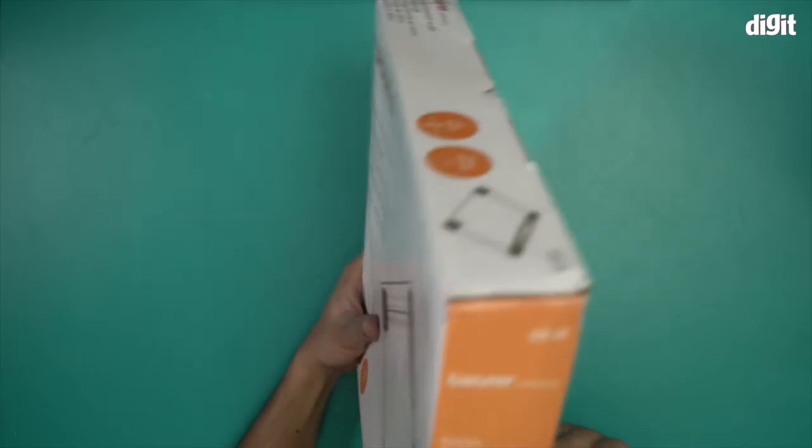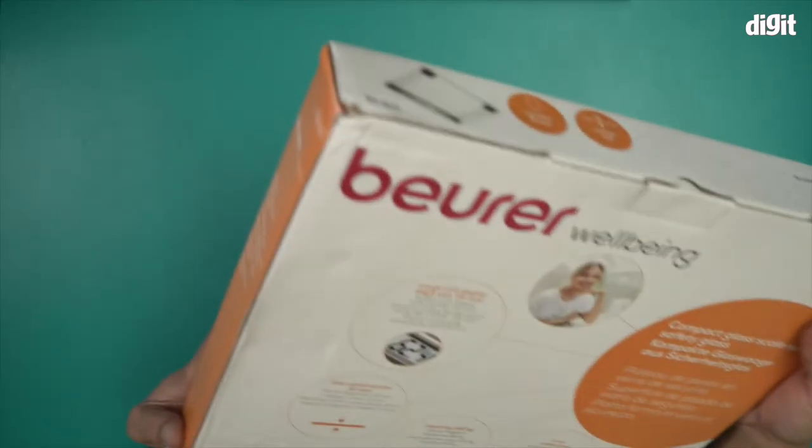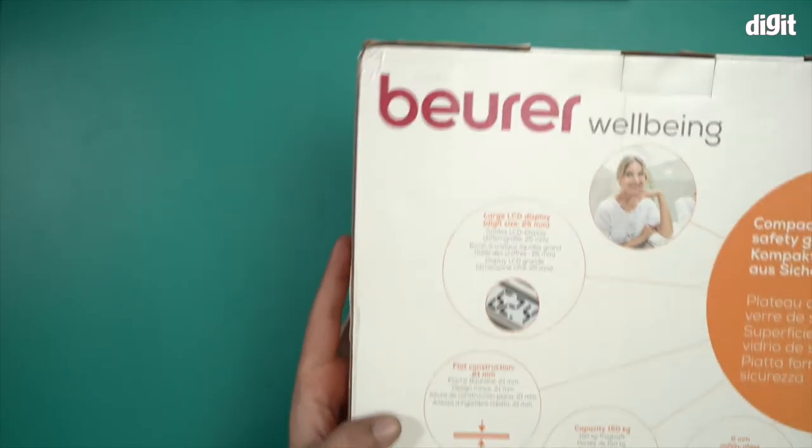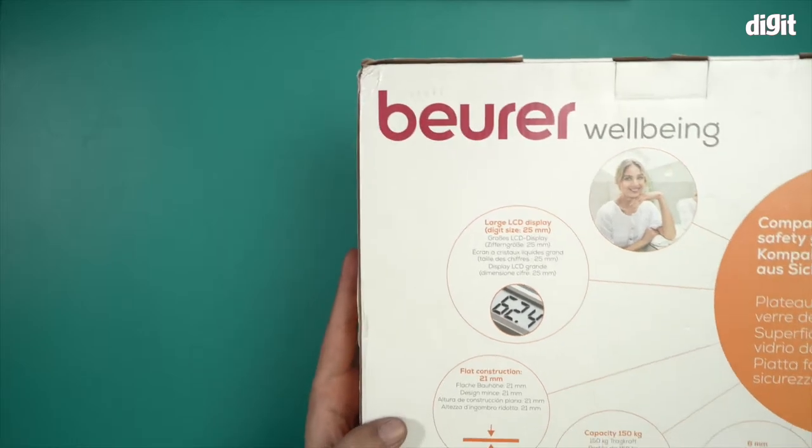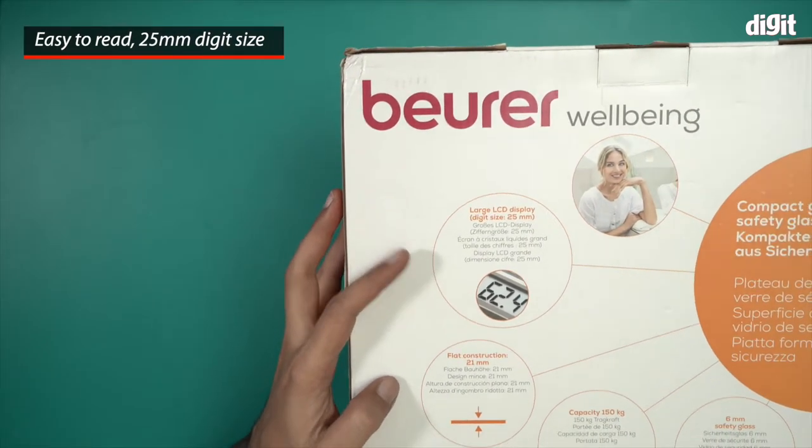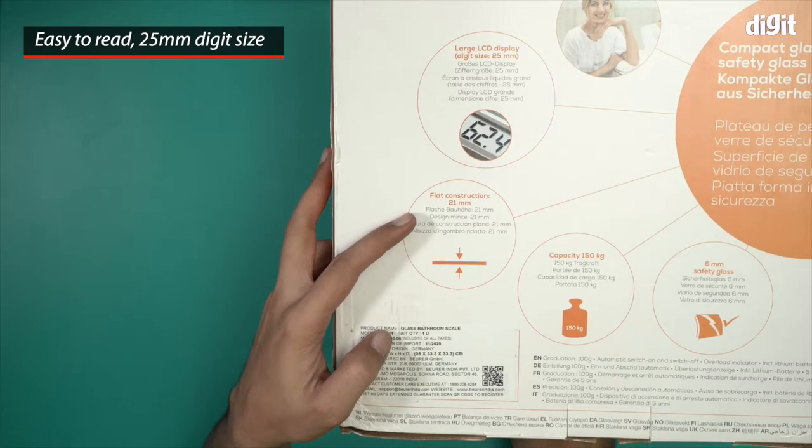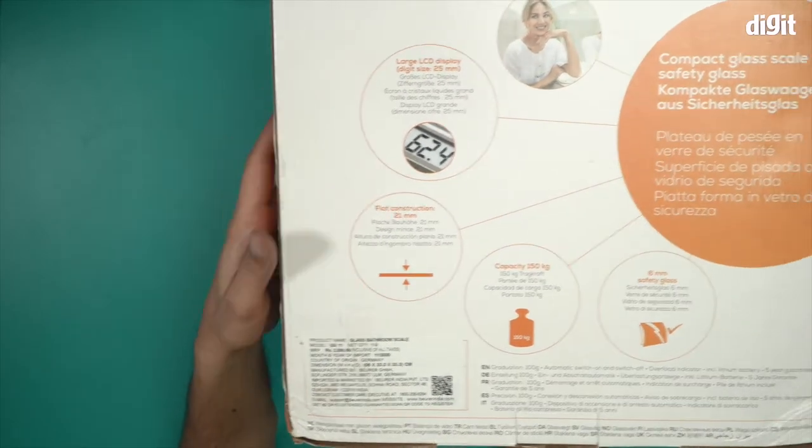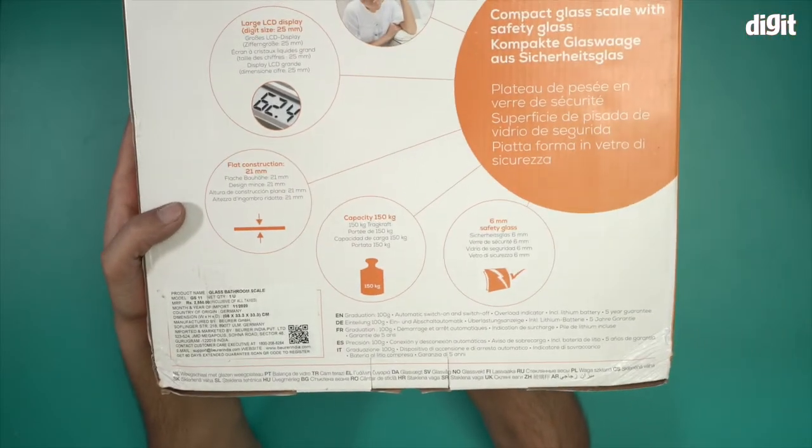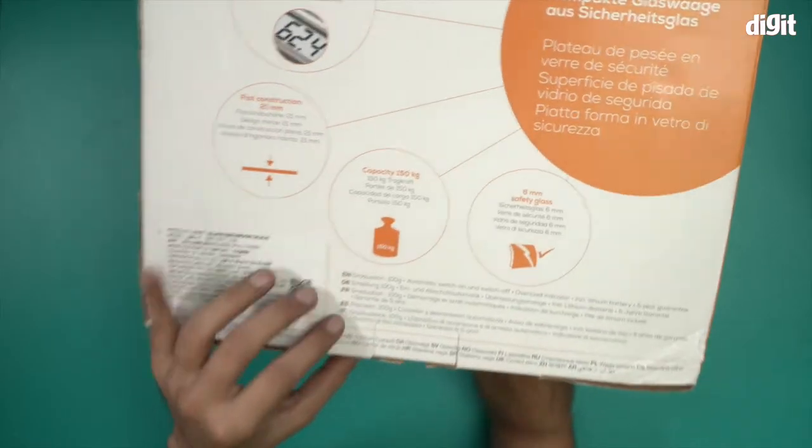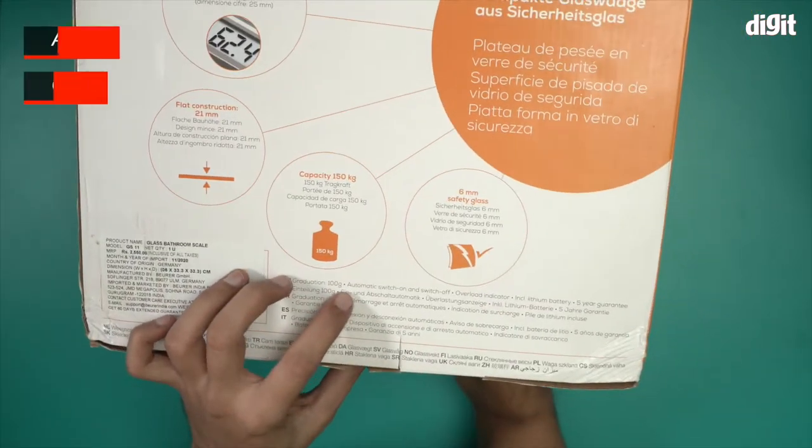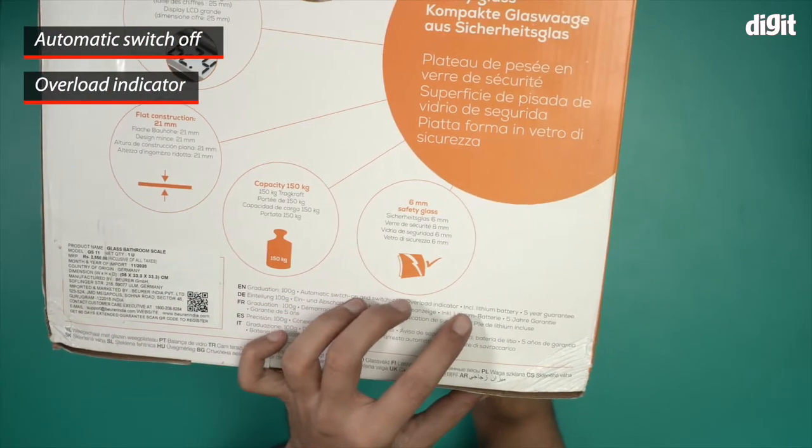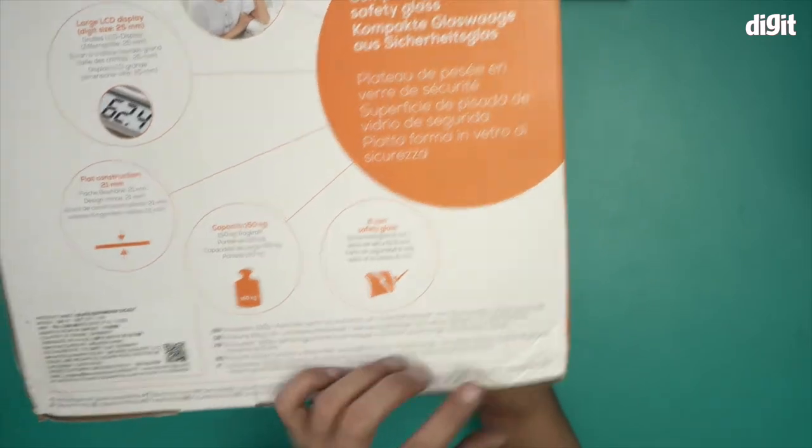Let's quickly look at the other information. There's a large 25 millimeter LCD display on top. The flat construction is 21 millimeters with tempered glass, capacity of 150 kg. It features automatic switch on and off, overload indicator, included lithium battery, and a five-year guarantee.